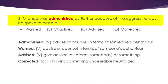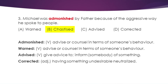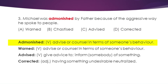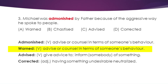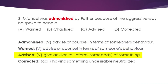Sentence three. Michael was admonished by his father because of the aggressive way he spoke to people. Our word for consideration is 'admonished'. Our options are A — warned, B — chastised, C — advised, and D — corrected. Admonished is a verb which means advise or counsel in terms of someone's behaviour. Option A — warned — means advise or counsel in terms of someone's behaviour. Option B — chastised — means admonished in strong language.